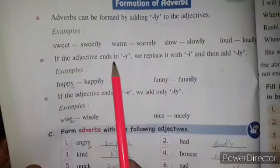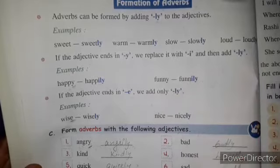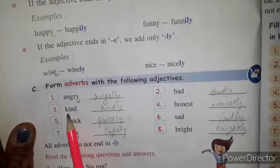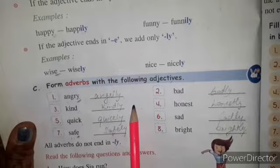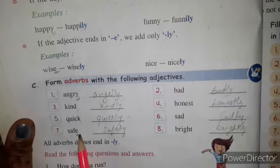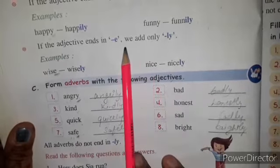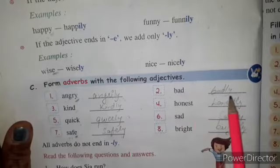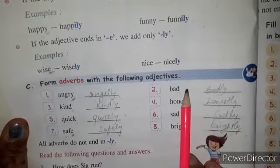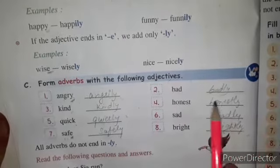If the adjective ends in y, replace with i and add -ly. Second kind: quick → quickly — ishka end k se hota hai, toh simply ly add karo. Safe → safely — ishka end e se hota hai, toh e ki jagah ly add karo. That was the third rule. Bad → badly, honest → honestly, sad → sadly, bright → brightly. Jisme na y waala rule hai, na e waala — toh simply ly add karna hai. Istarah se adverb add karna hai.